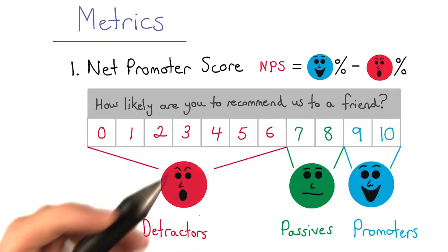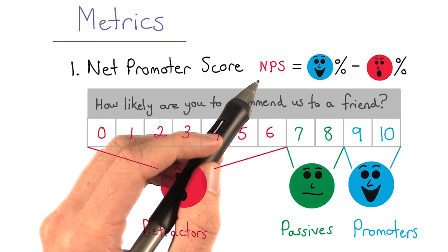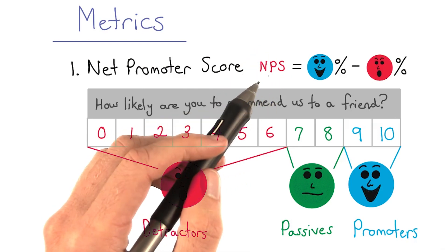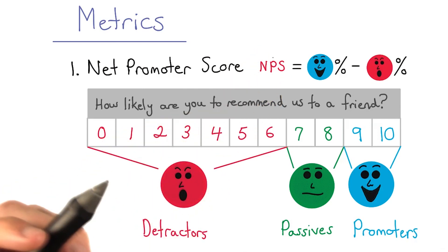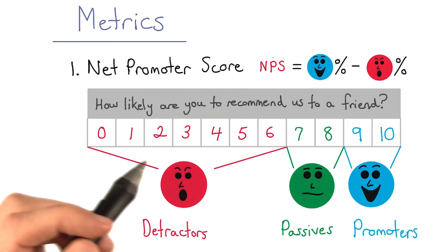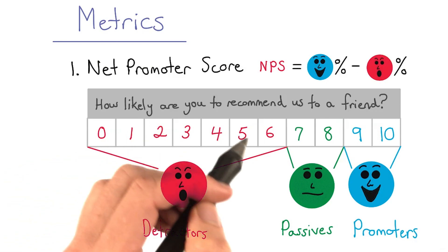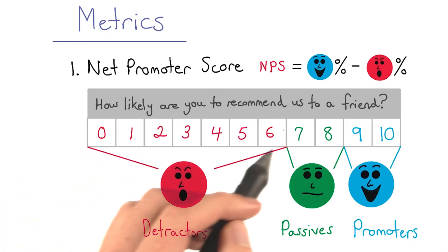This means that NPS can fall between negative 100 and positive 100. You could, for example, have everyone vote you between 0 and 6.